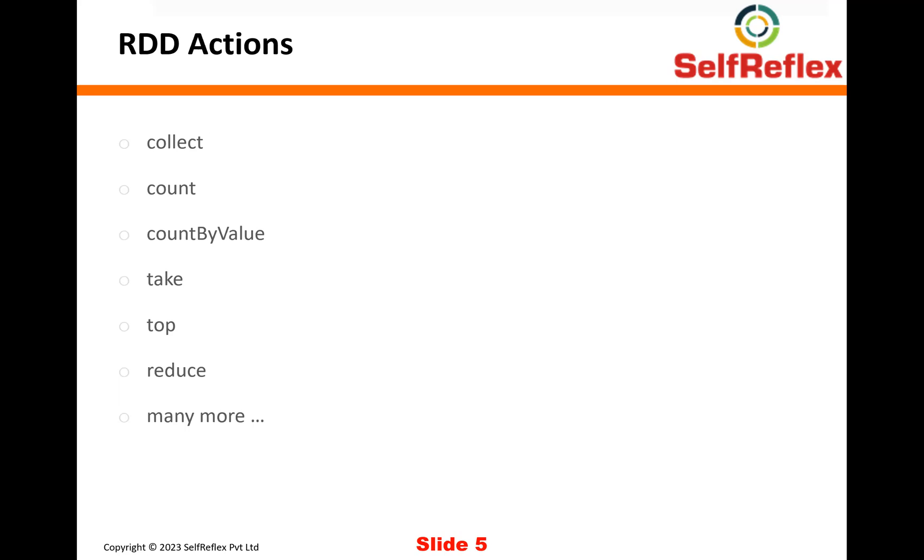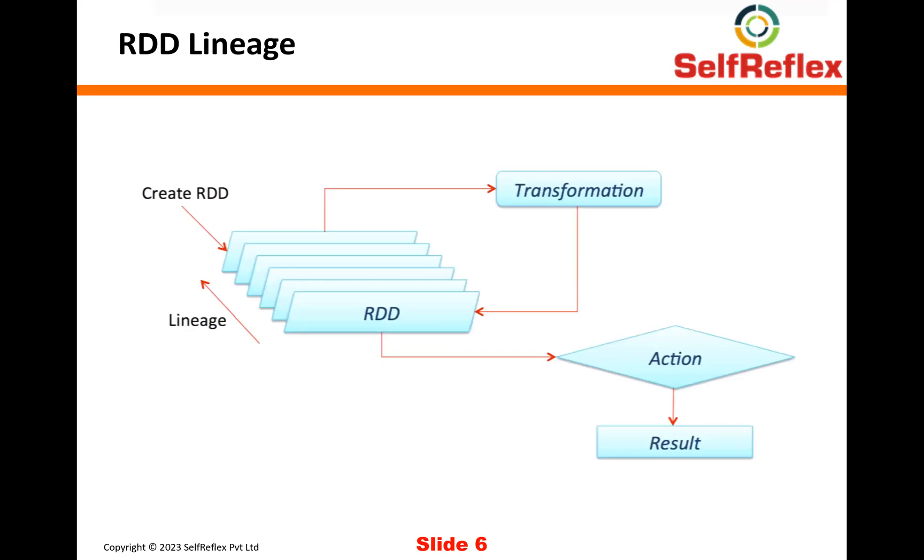But the idea here is that you apply some transformations on your RDDs and then you apply some action and finally you get your result back. And the biggest advantage of doing this through RDDs is that all the processing is happening in parallel. So the more the hardware that you have, the more the speed that you will get.